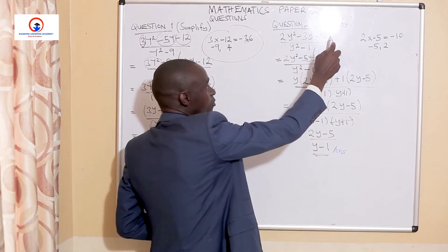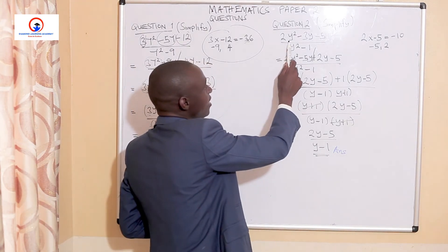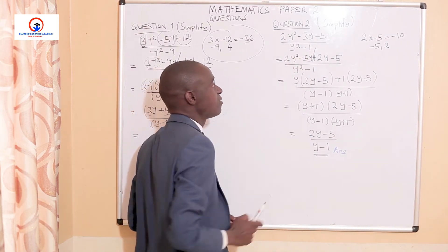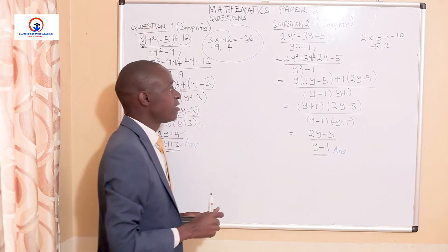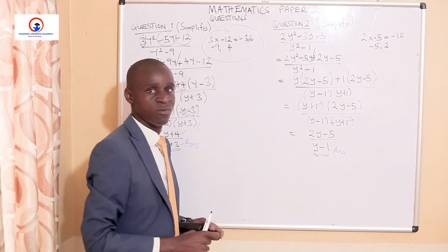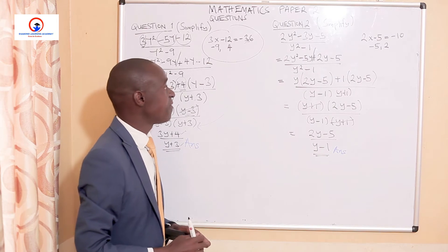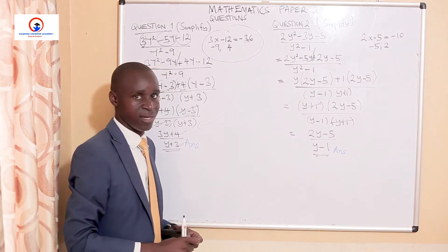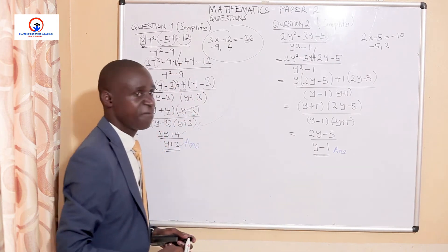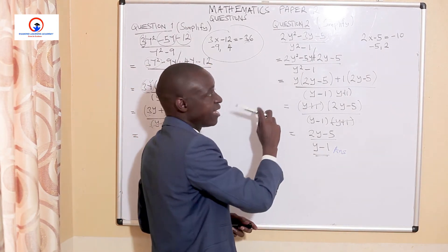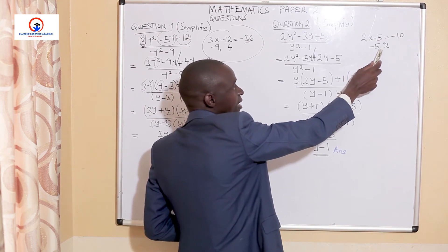Okay, let's move on to question 2. It is also saying simplify this expression: 2y squared minus 3y minus 5 over y squared minus 1. We can observe that it's basically the same type of question but with different expressions. The denominator is a difference of two squares, and the numerator is a quadratic expression just like in the first equation. The first step when trying to factorize the numerator is to look at the first number and the last number, then find their product. So we multiply 2 by negative 5 to give us negative 10.